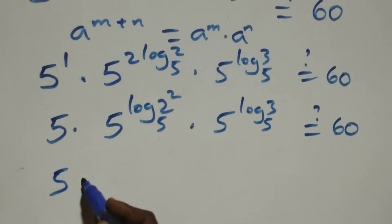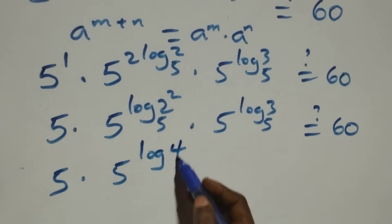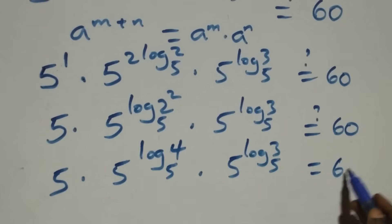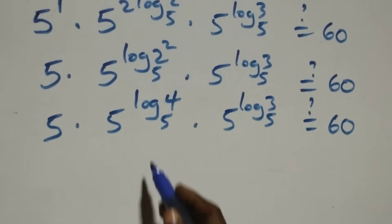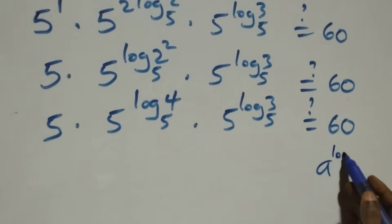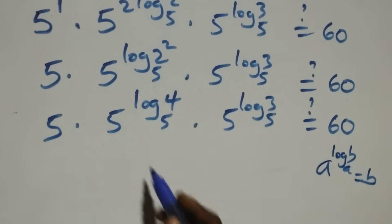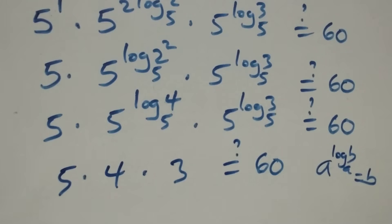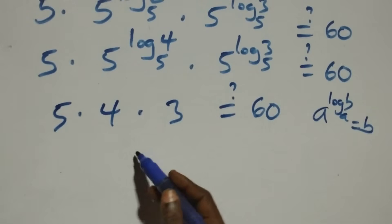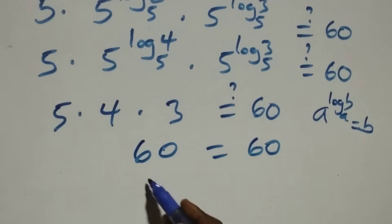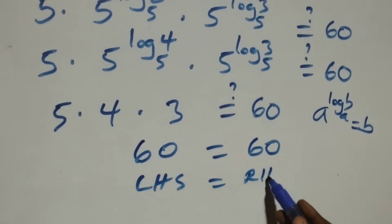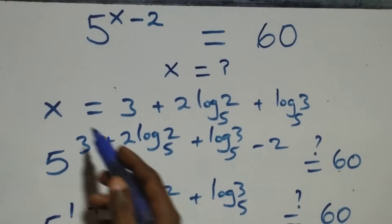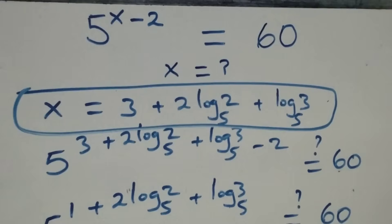We have 5 times 5 raised to power log₅(2²), times 5 raised to power log₅3, equals 60. Applying the rule that A raised to power log_A(B) equals B: 5 raised to power log₅4 equals 4, and 5 raised to power log₅3 equals 3. So we get 5 times 4 times 3 equals 60. The left-hand side equals the right-hand side. Therefore, x equals 3 plus 2 log₅2 plus log₅3 satisfies the given problem.